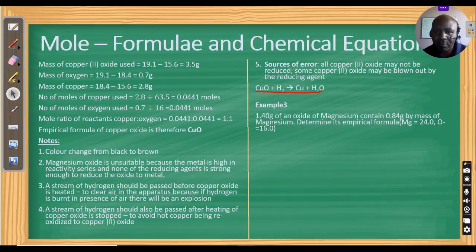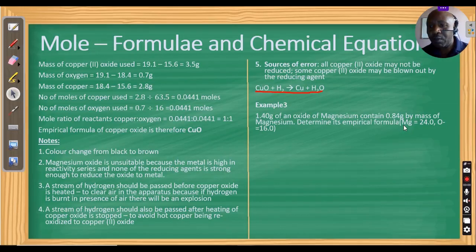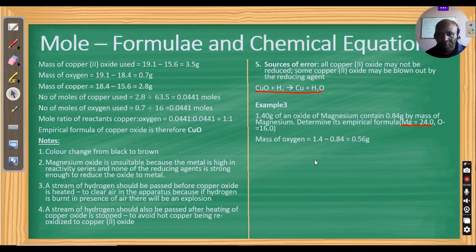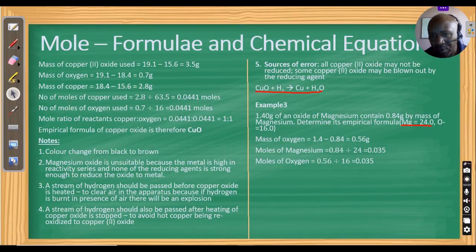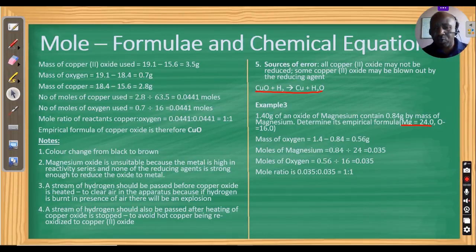Example 3: 1.4 grams of an oxide of magnesium contains 0.84 grams of magnesium by mass. Determine its empirical formula. Mass of oxygen = 1.4 − 0.84 = 0.56 grams. Moles of magnesium = 0.84 ÷ 24 = 0.035. Moles of oxygen = 0.56 ÷ 16 = 0.035. Ratio is 1:1, so the empirical formula is MgO.